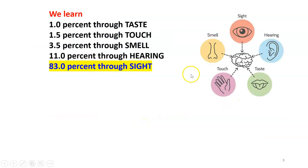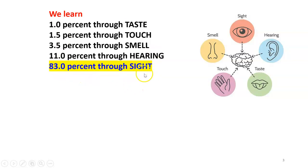We learn through five sense organs. Whatever we claim as knowledge or experience, it is only through the five sense organs that information is received. Among the five sense organs, sight — what we see — accounts for 83% of information intake, so the remaining senses are very meager. In the teaching-learning process inside the classroom, hearing and seeing are the most important.